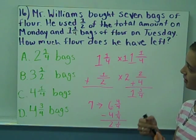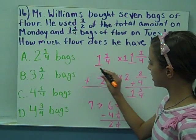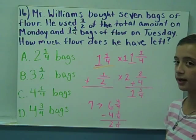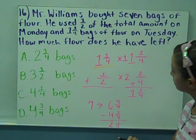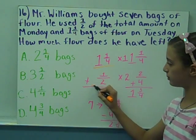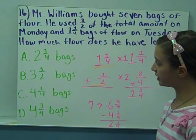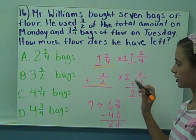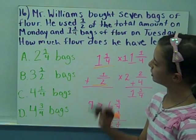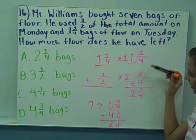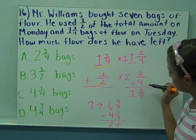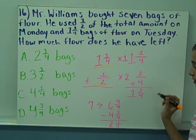I solved this one by first writing down the number he used on Tuesday, and then I wrote the number he used on Monday. They needed a common denominator, so the common denominator for four and two was four. Then I got one-and-one-fourth and two-fourths, or one-half.